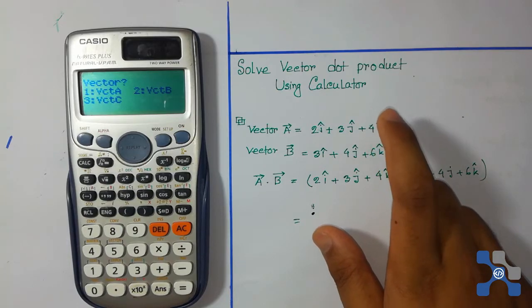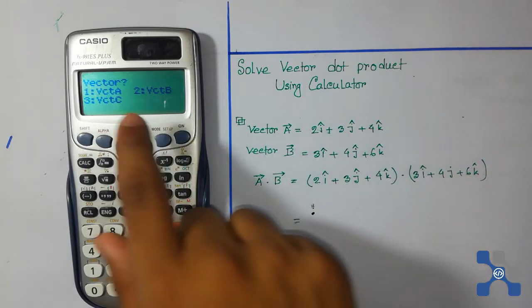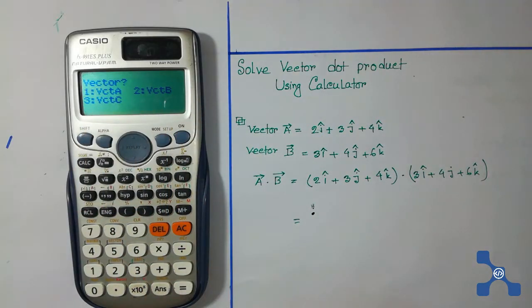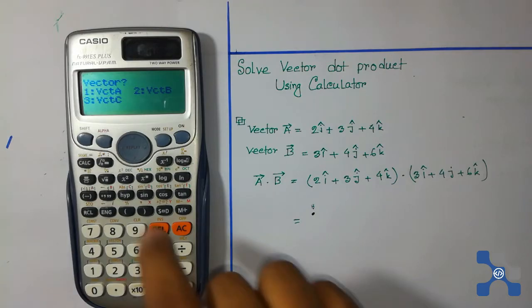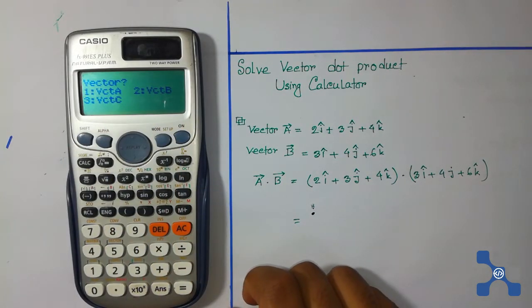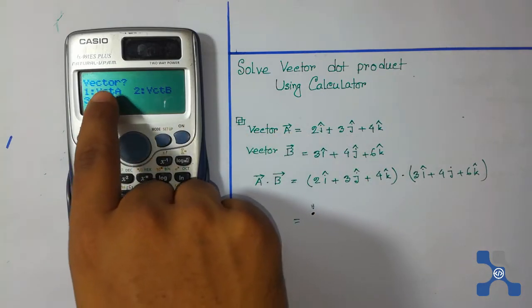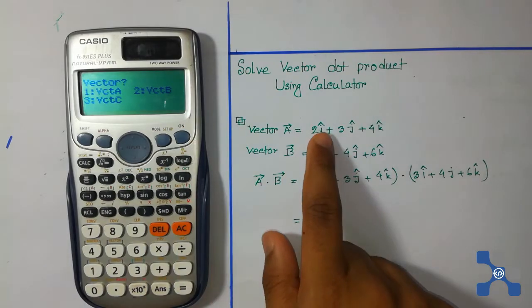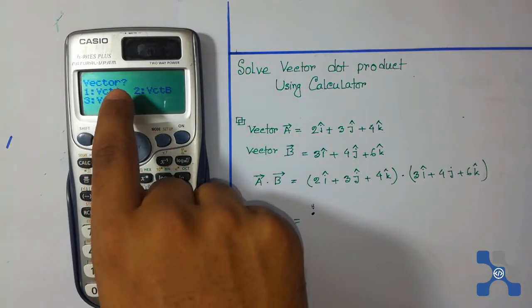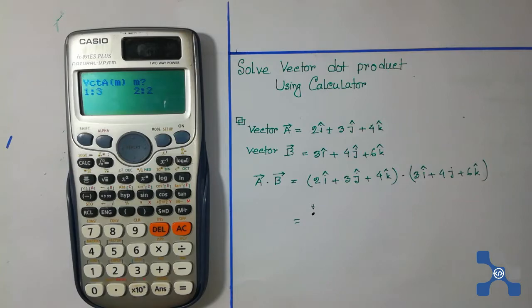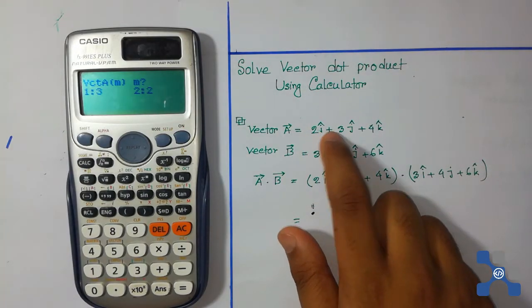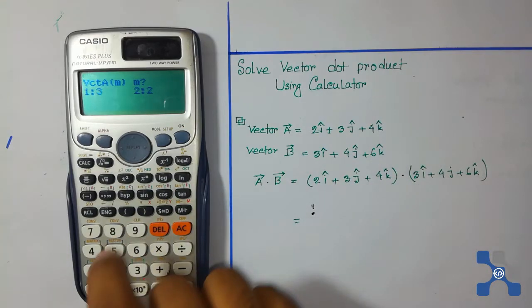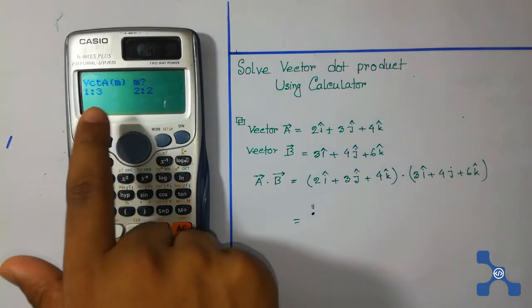First we load vector A. We can see there are three vectors: vector A, vector B, and vector C. We can load any one of them. In this case we load vector A, so press 1. Then select the dimension — this is a three-dimensional vector, so press 1 because 1 is for three dimensions.